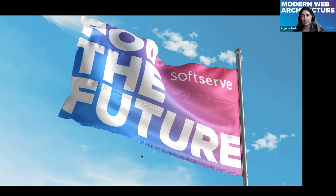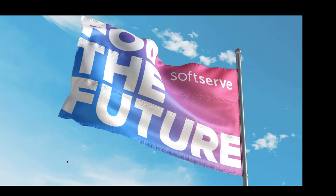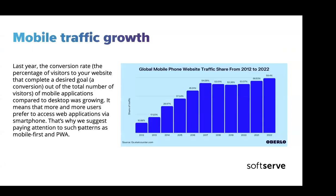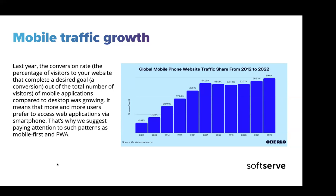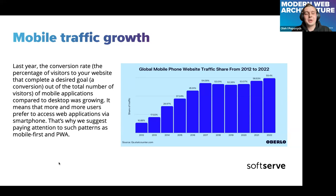A question was raised about what 'mobile devices' means in context — specifically whether the statistic about internet traffic from mobile devices refers to small screens or actual mobile phones. The diagram in the article refers to mobile phone usage specifically, not just small screen sizes.